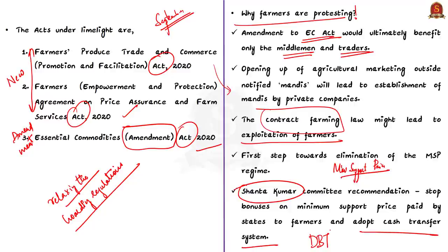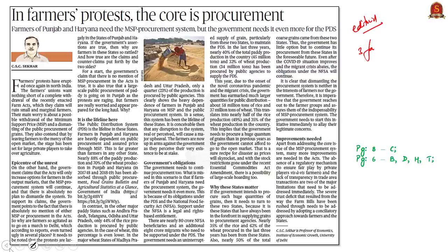The farmers cite the Shanta Kumar Committee recommendation to stop bonuses on MSP paid by states and adopt a cash transfer system — replacing MSP with Direct Benefit Transfer. The fourth round of talks between the Union government and farmer leaders ended inconclusively. Farmers are very stubborn and are not accepting anything less than the repealing of all three acts. The editorial asks why farmers are continuing protests despite government assurances that MSP will be continued. Ironically, at the time of protests, the government is procuring large quantities of food grains from Punjab and Haryana.